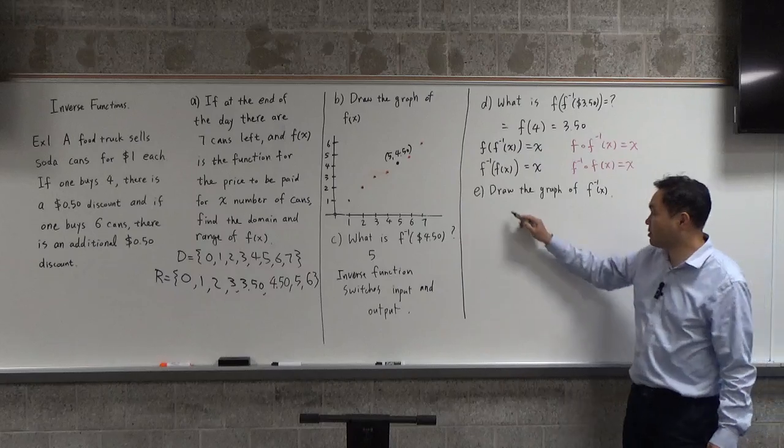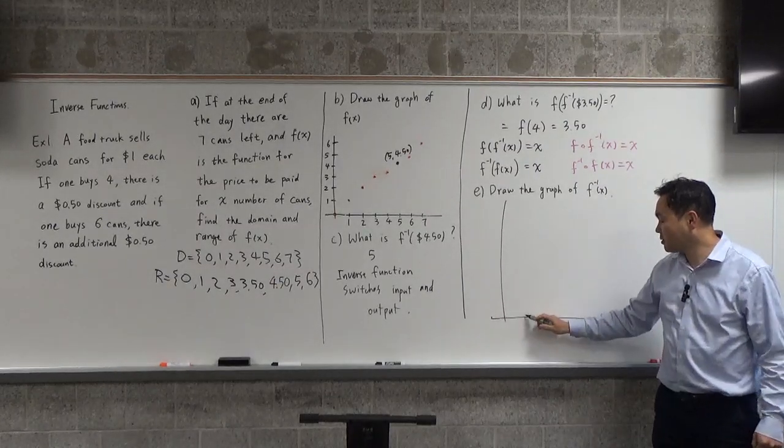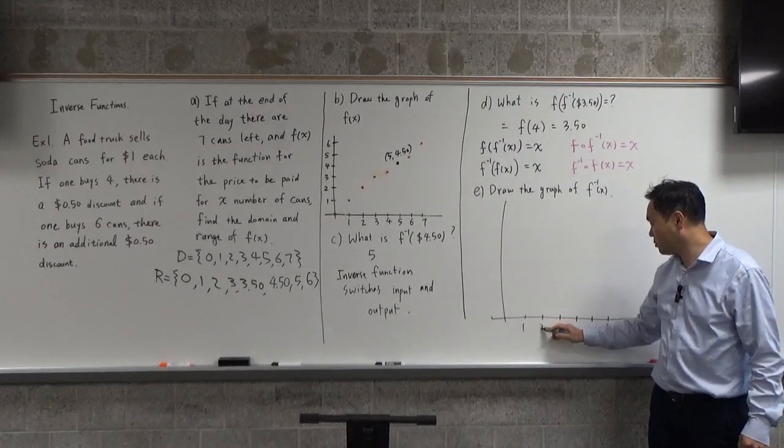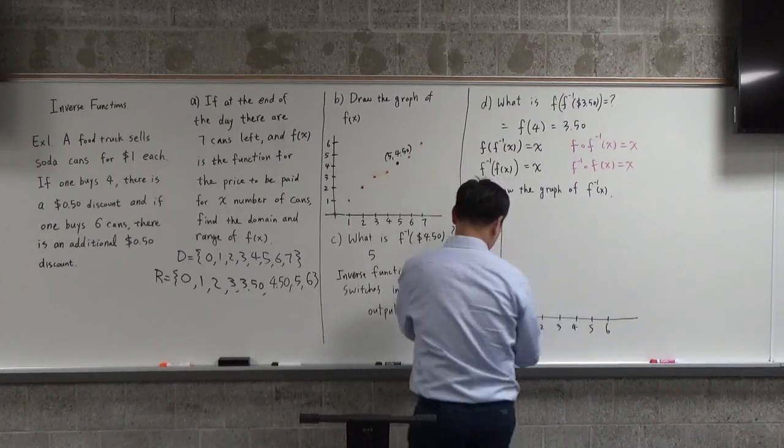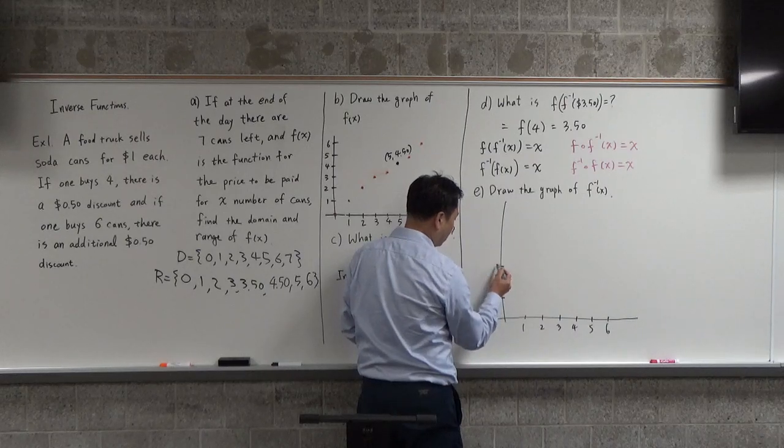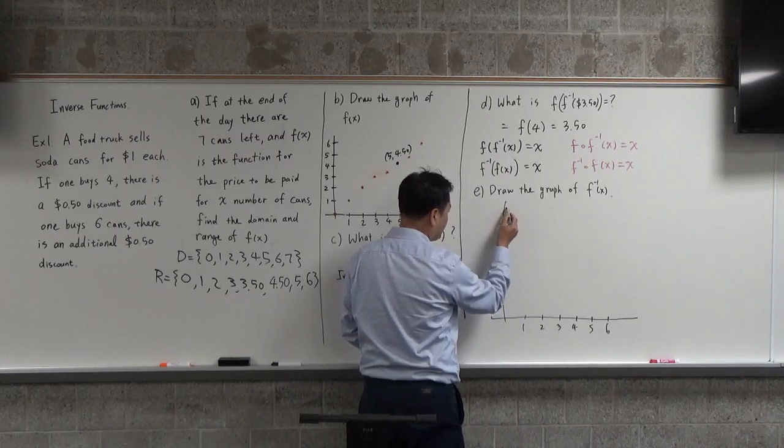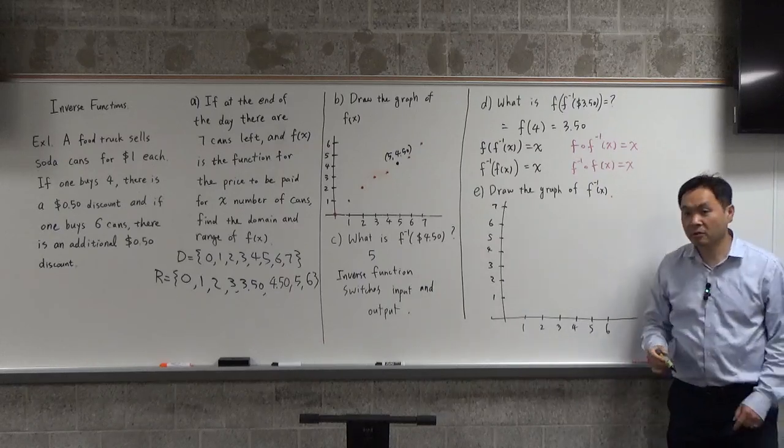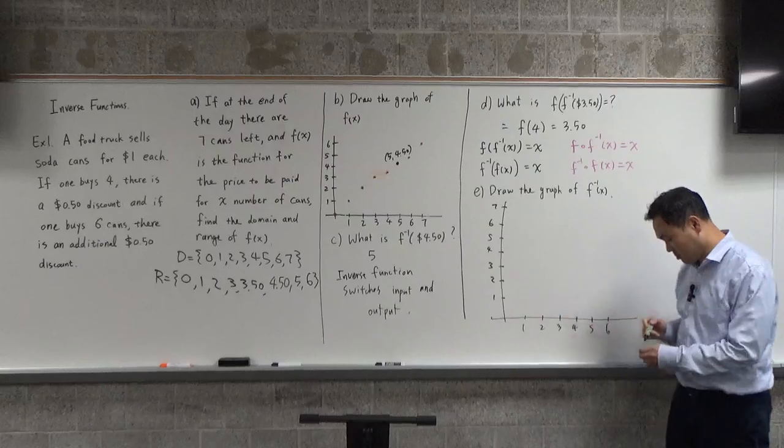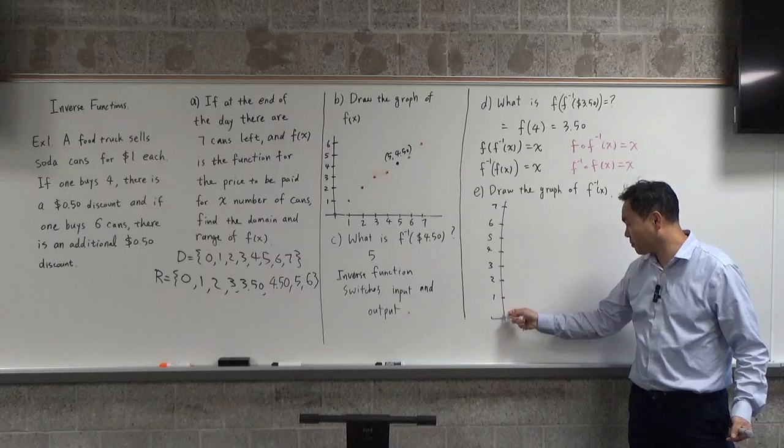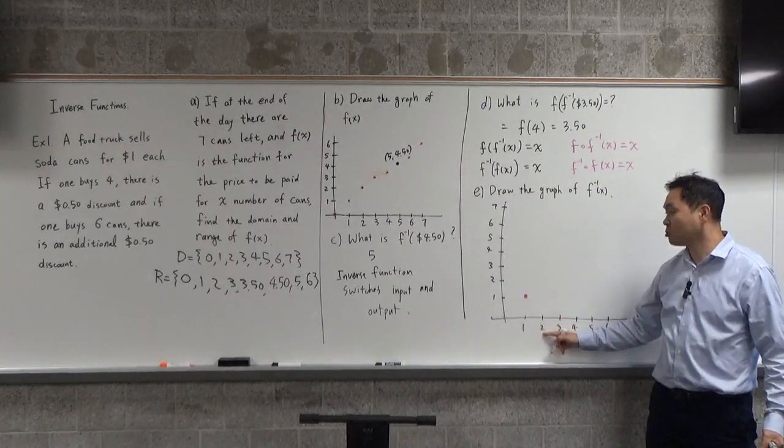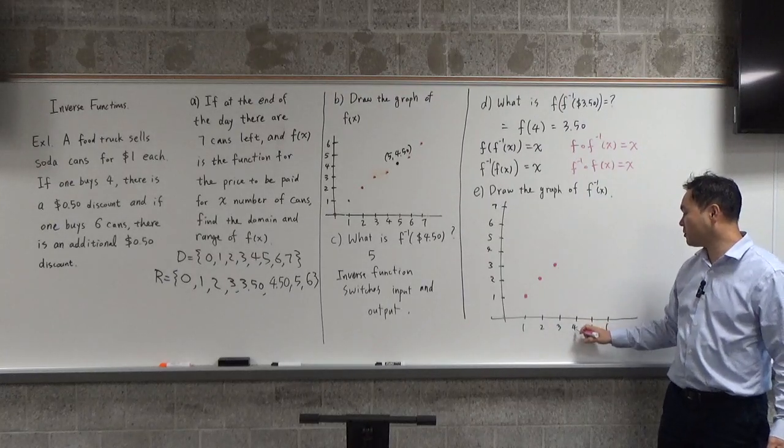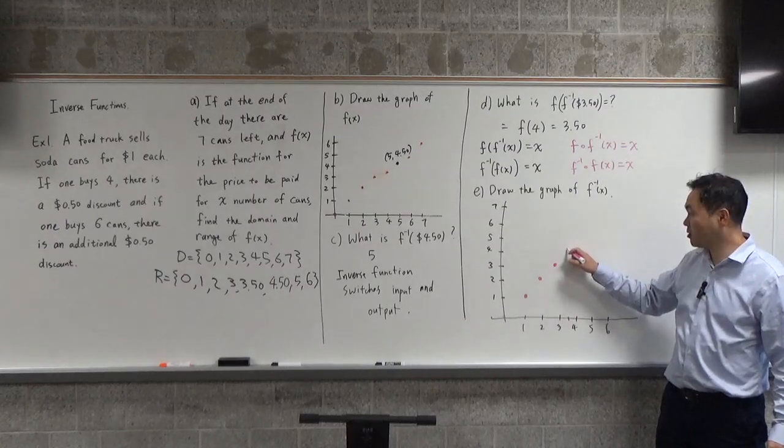Now, let's draw the graph of F inverse of x. Setting up the axes: 1, 2, 3, 4, 5, 6 on both axes, and 7 on the x-axis. If somebody paid $1, how many cans did they buy? 1. If the payment was $2, that's 2 cans. $3 means 3 cans. But then, it's not $4 - it's $3.50 for 4 cans.